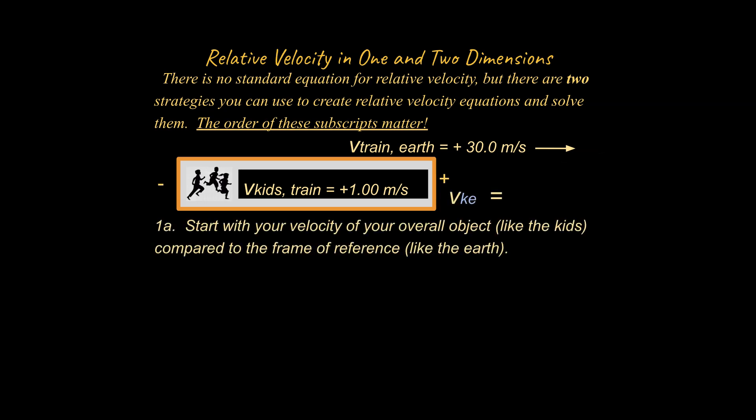You could say the velocity of the kids with respect to the train is a positive 1 meter per second. I'm going to assume to the right is positive, to the left is negative. And the velocity of the train with respect to the Earth is going to be a positive 30 meters per second. All right, so the first thing we're going to do is start with the velocity of the overall object, like the kids, compared to the frame of reference, like the Earth.